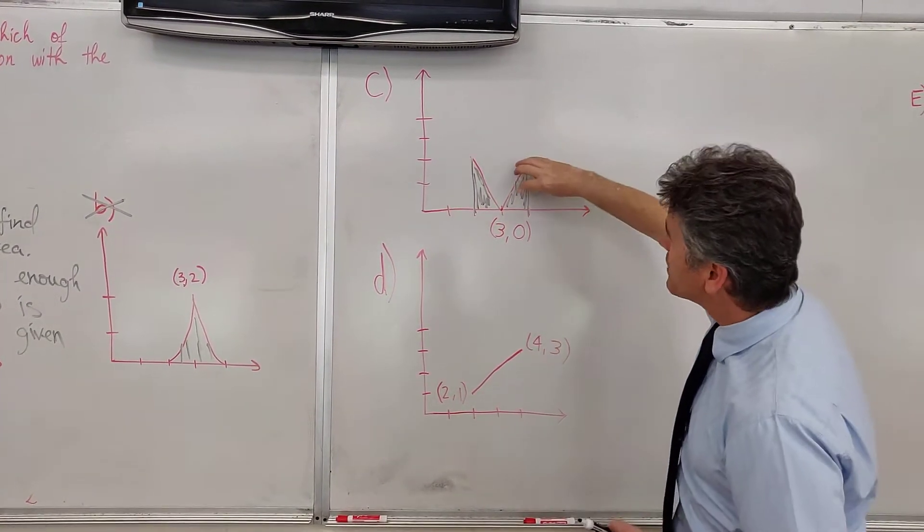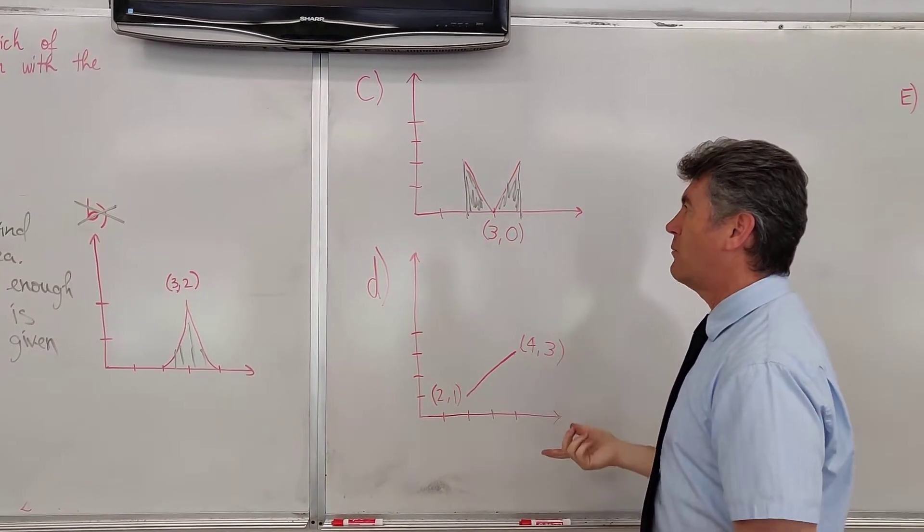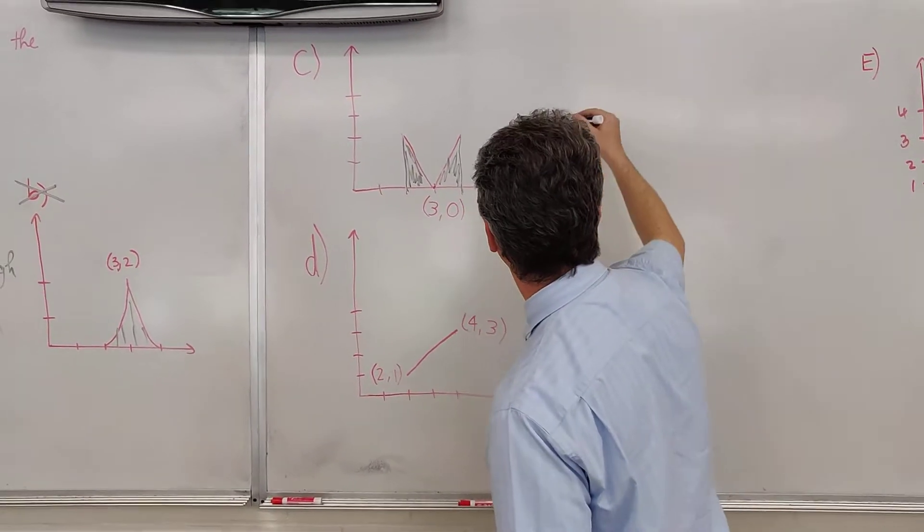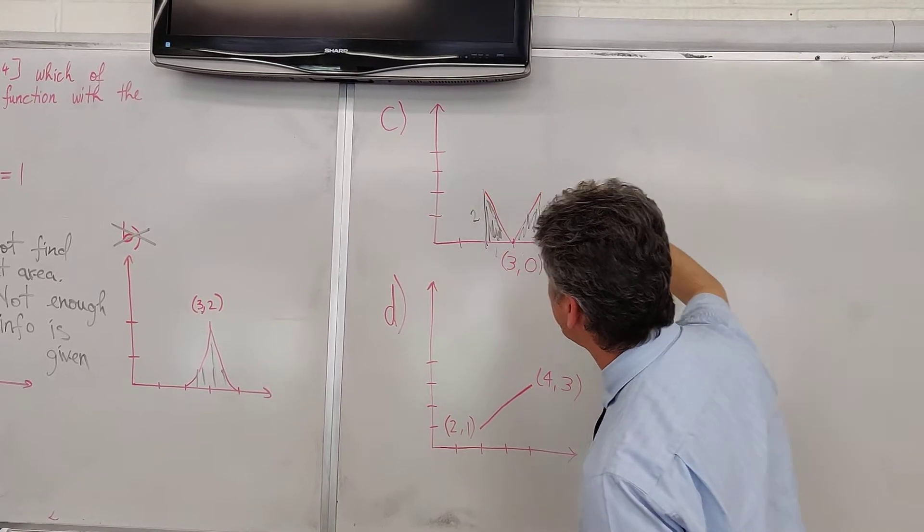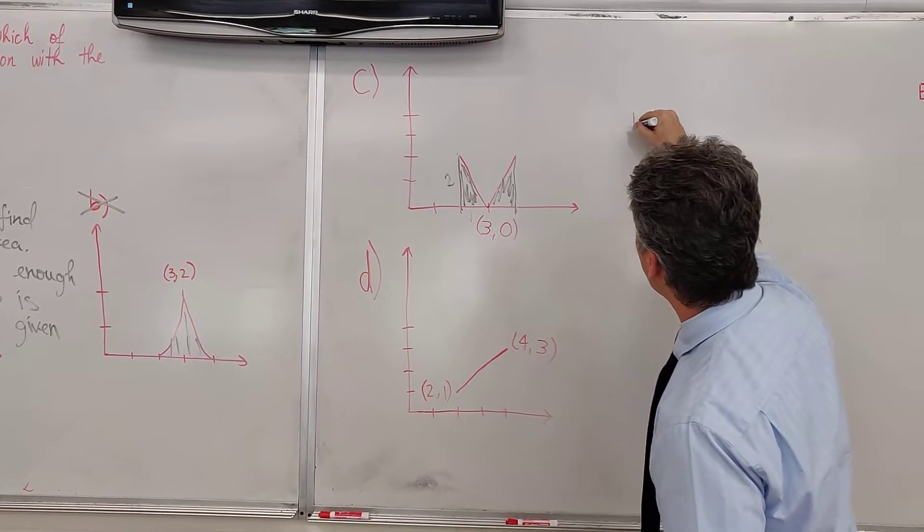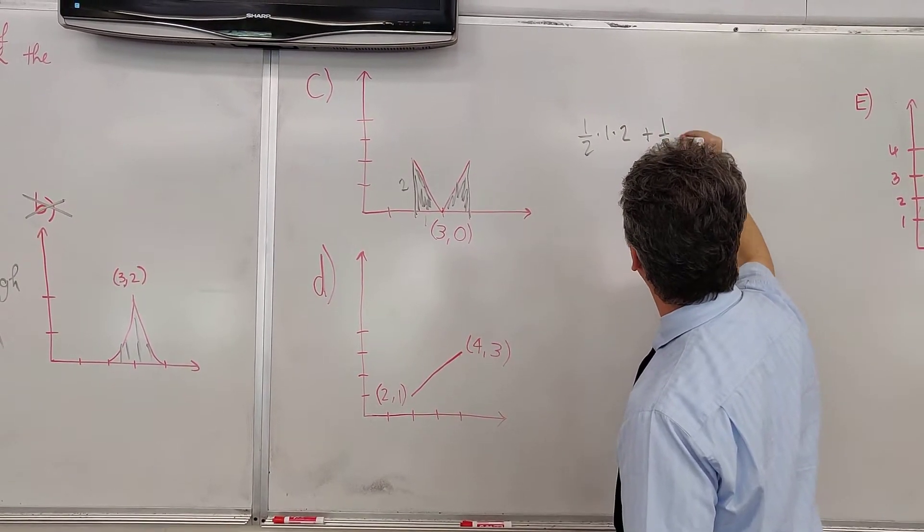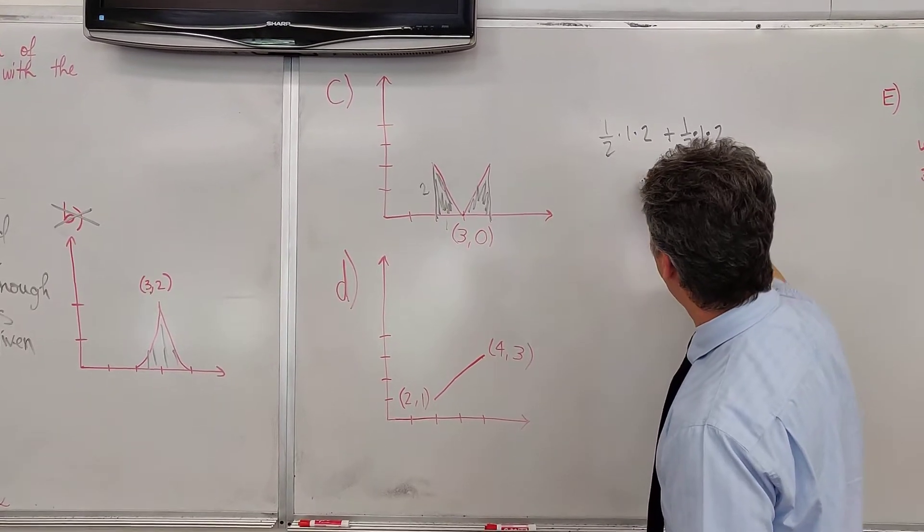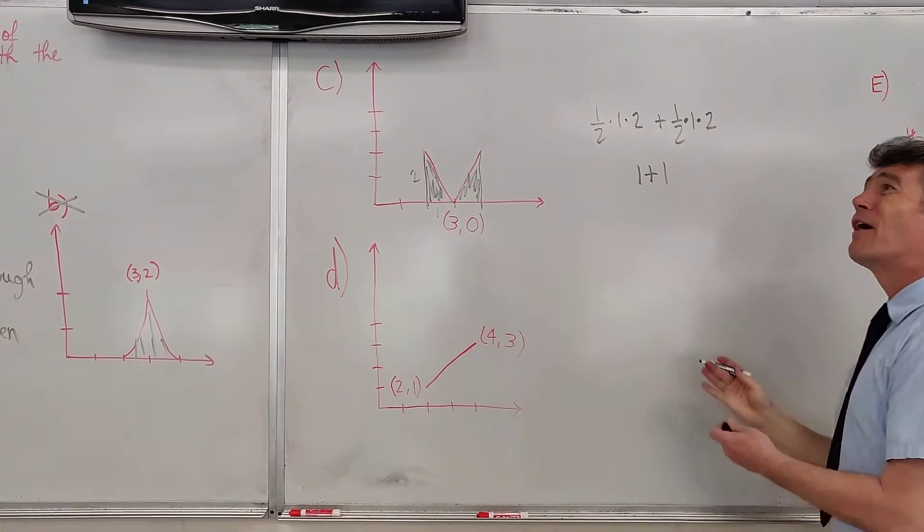If you want to get creative, you can take this triangle, rotate it, put it over here and form a rectangle. If you don't want to get creative, it doesn't matter. For both those triangles, the base is 1 and the height is 2. We have one half times 1 times 2 plus one half times 1 times 2.